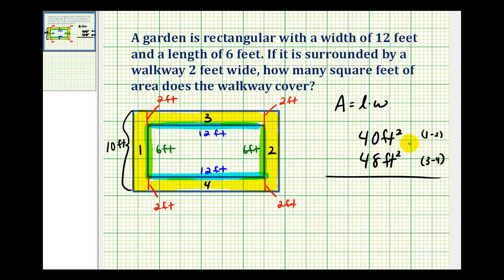So the sum of these two areas would be the area of the entire walkway. It looks like we have 88 feet squared for the area of the yellow walkway. I hope you found this helpful.